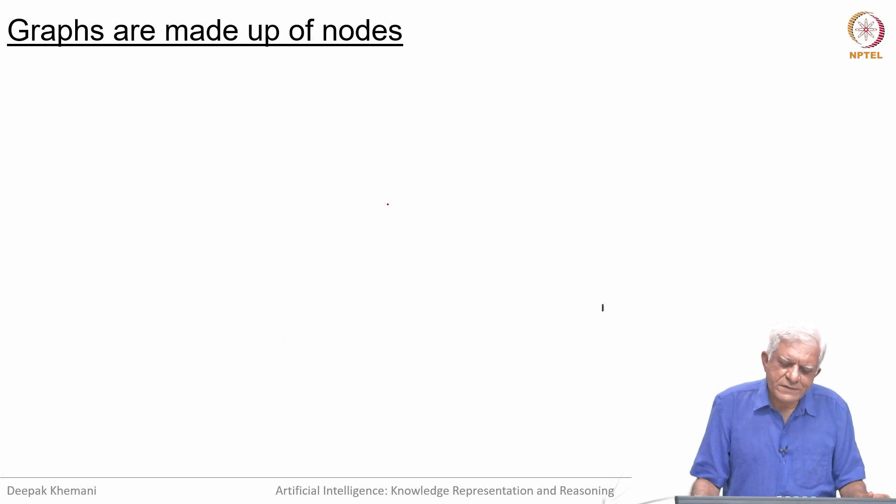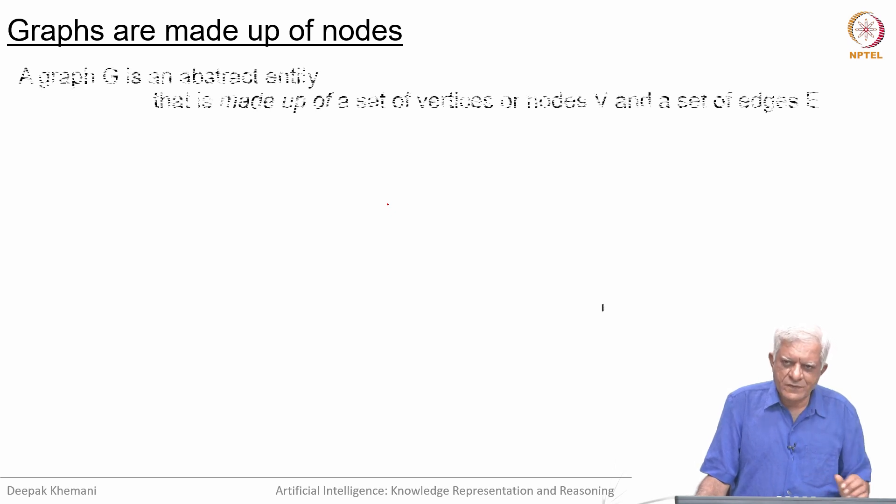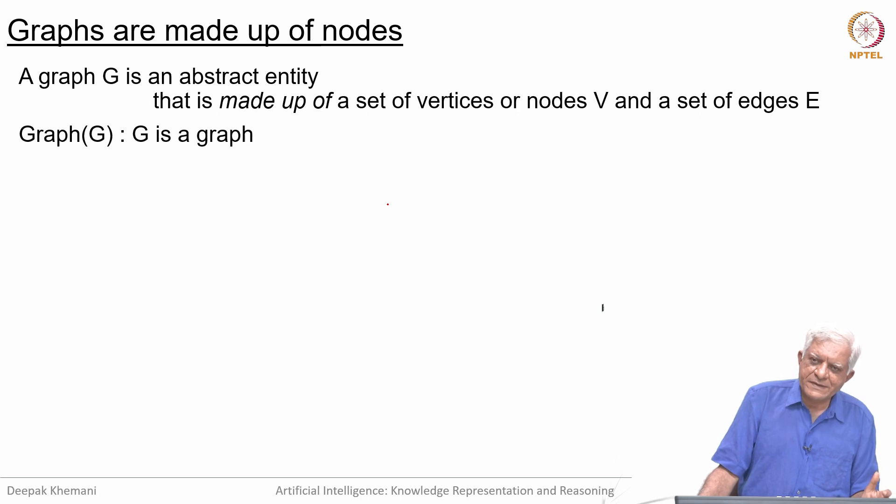What exists in the domain are nodes and graphs are made up of nodes. A graph is an abstract entity that is made up of a set of vertices or nodes V and a set of edges E. A set of vertices or nodes and a set of edges, that is what is the graph.